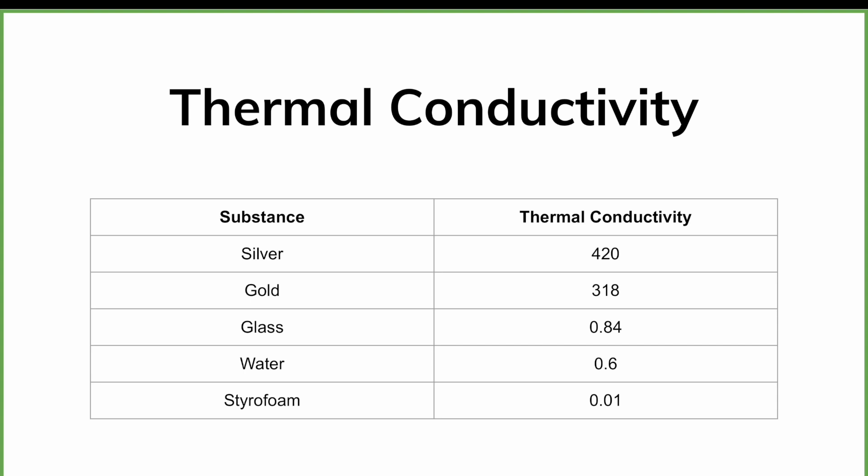Looking at some common K values: metals like silver and gold tend to have high thermal conductivity, while materials like glass, water, and air have quite low thermal conductivity. There's a huge difference between silver at 420 and styrofoam at 0.01.